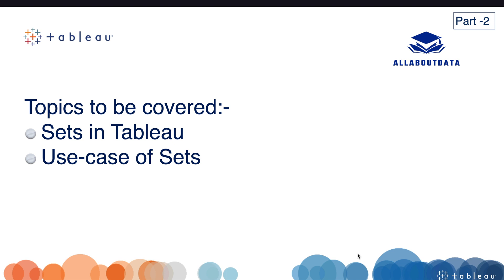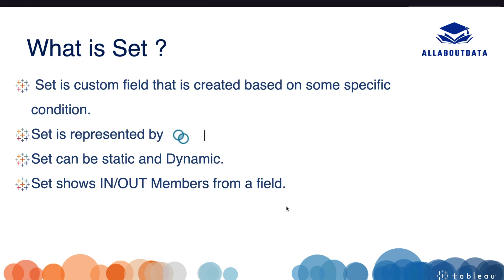So without any further delay, let's get started. What is a set? A set is a custom field that is created based on some specific condition. Set is represented by a specific symbol. Set can be static and dynamic. Set shows in/out members from a field — the members included in the set come under 'In' and others come under 'Out'. In the previous video we discussed groups — in a group we select members manually and create a group, so a group was static, but a set can be static and dynamic.